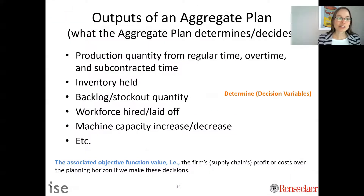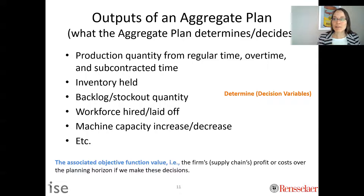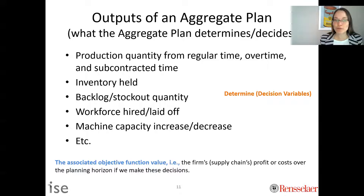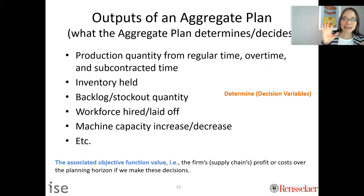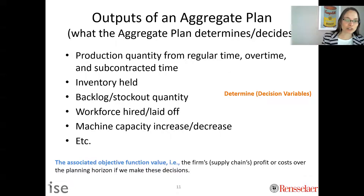We're going to maximize the firm's profit or minimize cost over that planning horizon. In terms of outputs, the aggregate planning problem decides production quantity from regular time, production quantity from overtime, how much to subcontract, how much inventory to hold, how much to backlog, workforce level, machine capacity, and so on. These are our decision variables, and we determine them by minimizing or maximizing an objective function to get the associated objective function value.